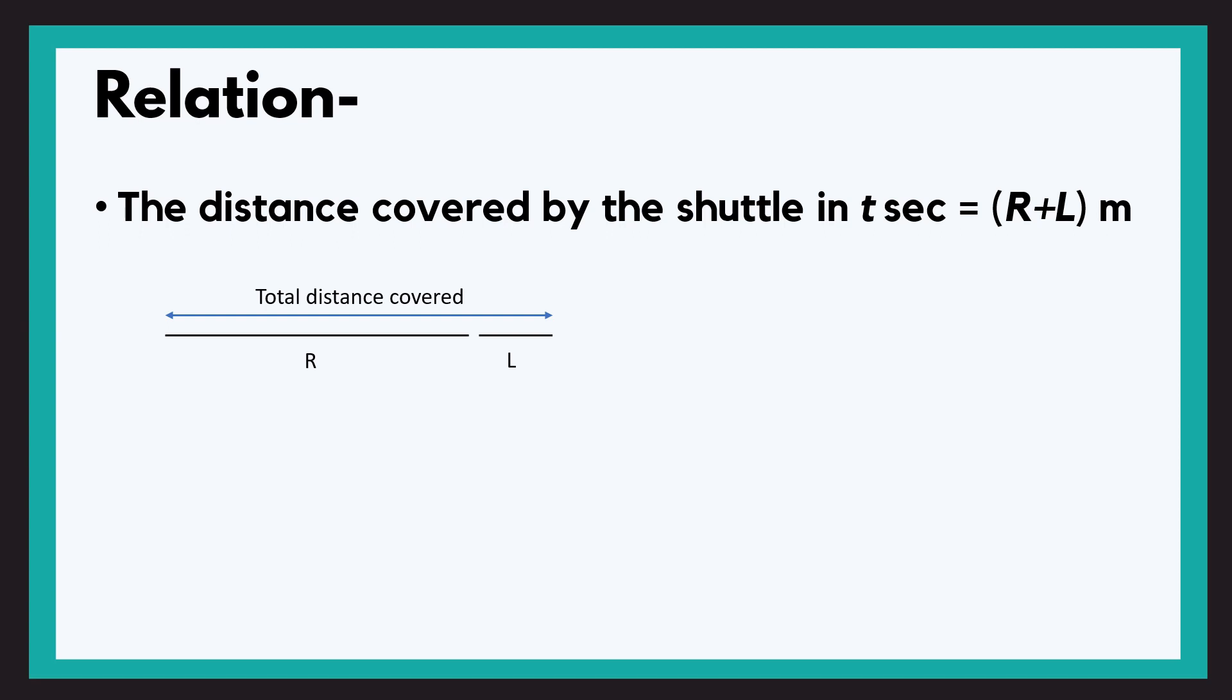Because the shuttle has to come out of the shed to complete one pick. Shuttle ko apne shed se completely bahar ana vaga to complete one successful pick. Have a look at the diagram below. So by this we come to know that the distance covered by the shuttle in t seconds will be R plus L, that is its effective length as well.